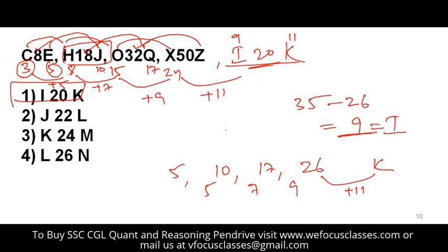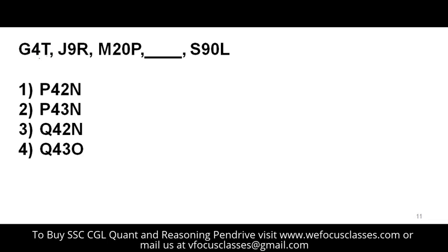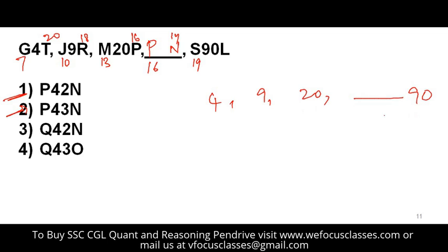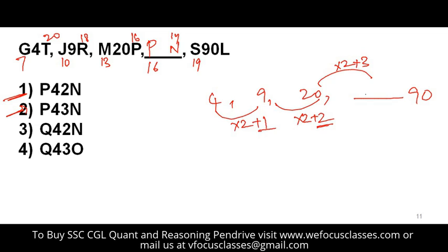The next problem is G4T, and similar letter-number combinations. Letters G, J, M have place values 7, 10, 13 — difference of 3 — so the next letter is 16, which is P. Going in reverse: T=20, R=18, P=16, so the next is 14, which is N. For the numbers: 4, 9, 20 — the pattern is multiply by 2 then add 1, add 2, add 3. So 20 times 2 = 40, plus 3 = 43. The answer is P43N.